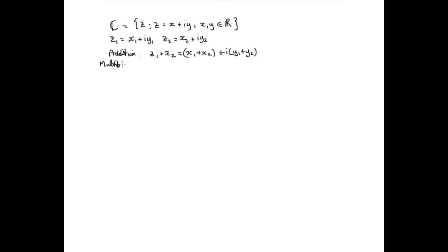Multiplication is a lot more complicated, and this definition shouldn't really be memorized, but you should know how to work it out. When multiplying these two complex numbers, the real part is x1·x2 minus y1·y2, and the imaginary part is x1·y2 plus y1·x2. You'll get that if you multiply using the normal rules for real numbers and remember that every time you come across i² you replace it by minus one.